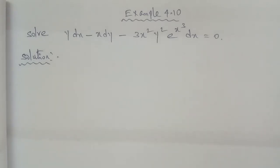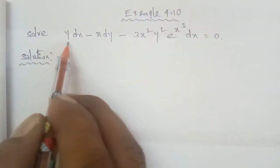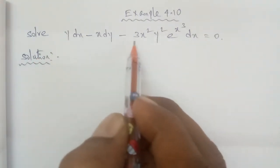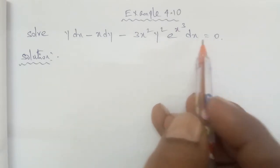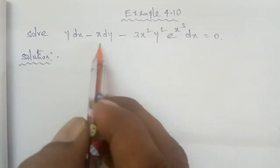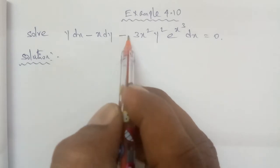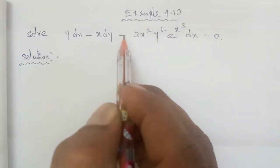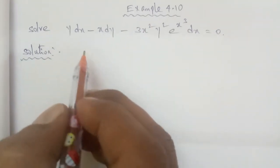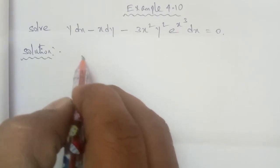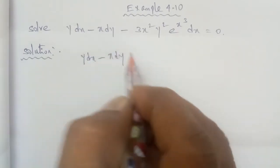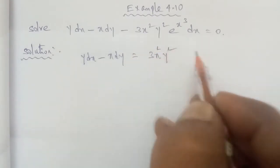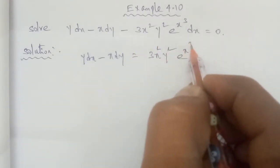Hi students, let's do Business Maths Example 4.10. Solve: y dx minus x dy minus 3x squared y squared e to the power x cubed dx equals zero. First, rearrange so that y dx minus x dy equals 3x squared y squared e to the power x cubed dx.